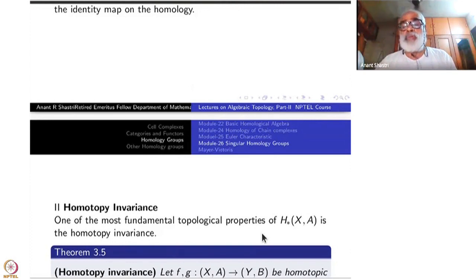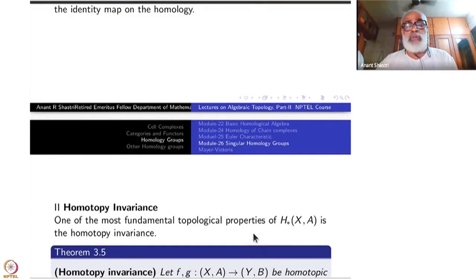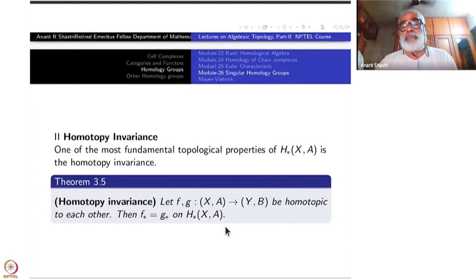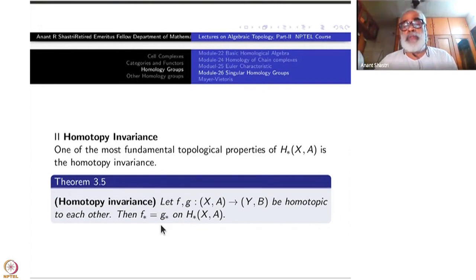If x to y is a homeomorphism then it has an actual inverse rather than just a homotopy inverse, so it is a homotopy equivalence also. The homotopy invariance statement is: if f and g from (X,A) to (Y,B) are homotopic to each other, then f* equals g* on H*. The maps induced by two homotopic maps on homology are the same.